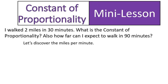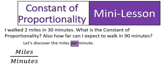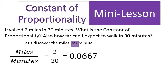First, we need to discover the miles that I walk per minute. Remember, when I see that word 'per,' I'm going to set it up as a fraction — the first word, miles, in the numerator; minutes in the denominator. And I just set it up. In this case, I'm walking 2 miles per 30 minutes. This gives me a repeating decimal approximately equal to 0.0667, or 0.066 repeating.